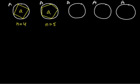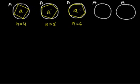Gradually, I am seeing the area between this polygon and the circle is decreasing. Now I am making a hexagon over here — 1, 2, 3, 4, 5, and 6. The number of sides are 6, and again I am watching the area is becoming lesser and lesser, gradually from here to here.